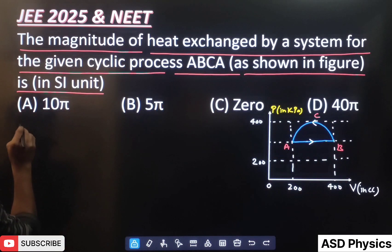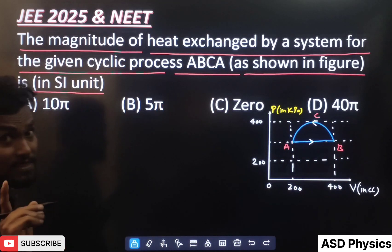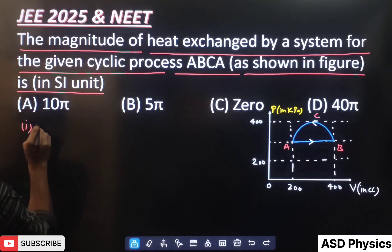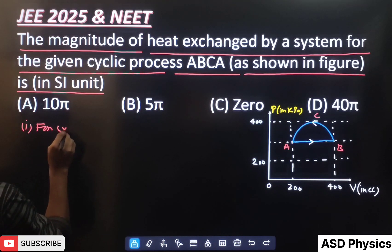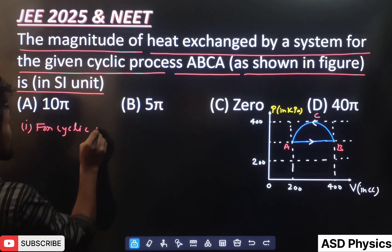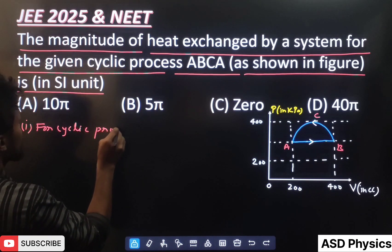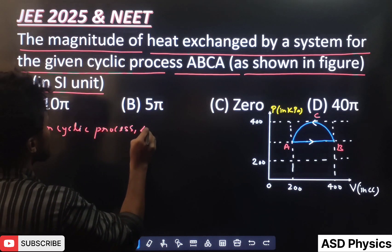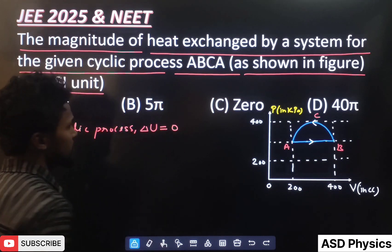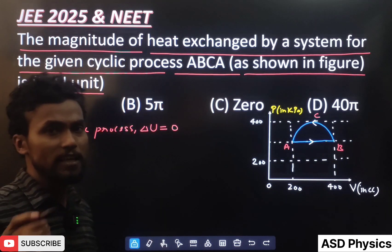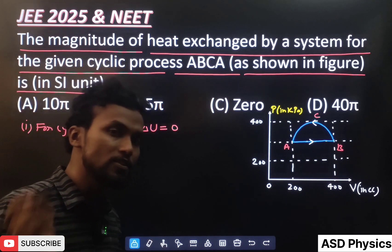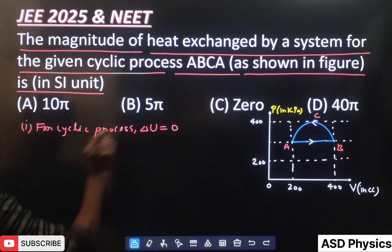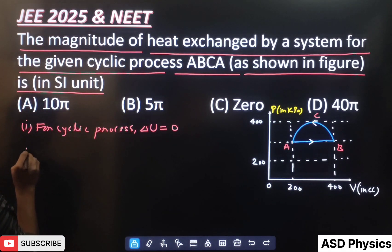The first thing we have to decode here is which process they are asking about — the cyclic process. Remember: for a cyclic process, the change in internal energy will always be zero. Even for an isothermal process the same situation applies. So delta U is zero.